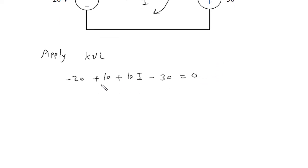Then this will be minus 10, then minus 10. Minus 30 will be minus 40 plus 10I is equal to 0. So this will be 10I is equal to 40. Therefore, I is equal to 4.